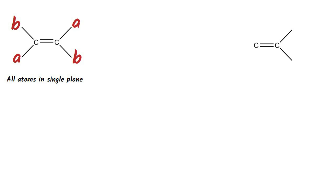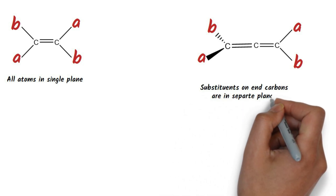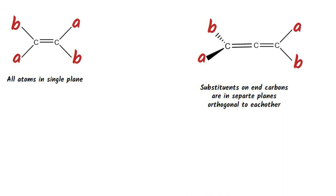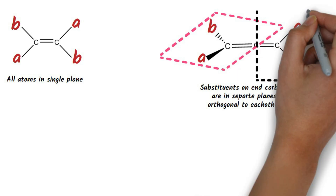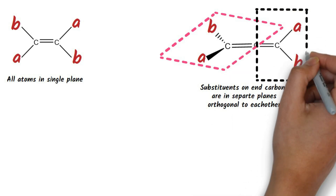In contrast, if we add a second double bond adjacent to this one, we get a structure like this. Now the substituents on the end carbons are in separate planes which are orthogonal to each other. That means this double bond and the substituents on the left side terminal carbon will be in the horizontal plane — substituent A comes out of the screen, and substituent B goes into the screen. This double bond and the substituents on the right side terminal carbon are in the vertical plane, which is the plane of the screen. The two planes are orthogonal to each other.